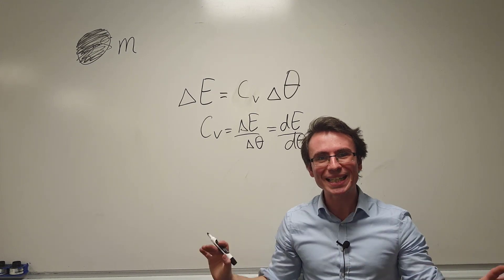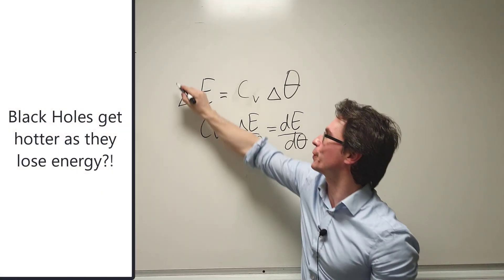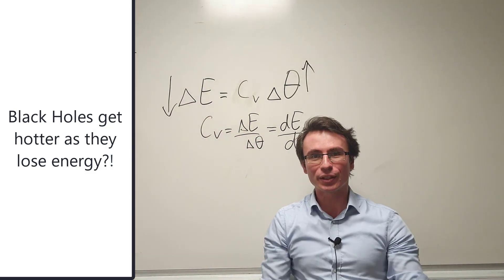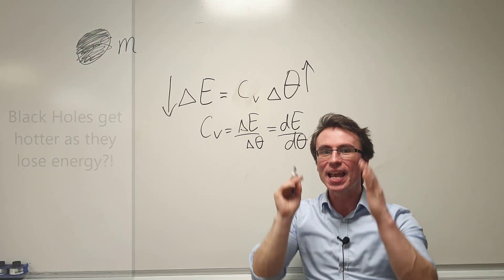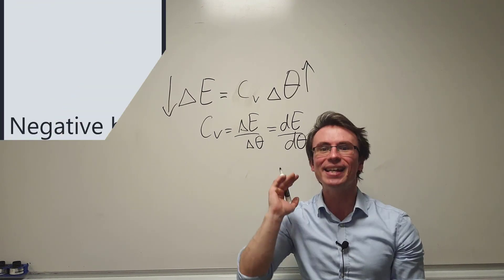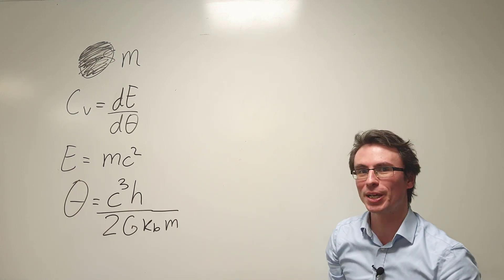Black holes are completely different. When black holes lose energy their temperature actually rises. The only way this could physically be happening is if their coefficient, if their heat capacity is negative. Let's find the heat capacity of a black hole using those equations.